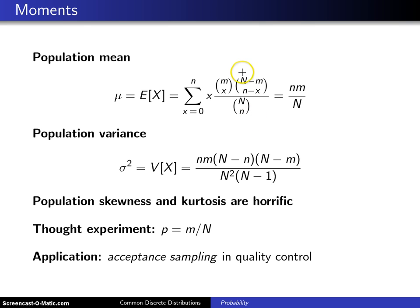If you compute this summation, the details are not given here, you get a nice closed form solution that's easy to write, which is little n times little m divided by capital N.